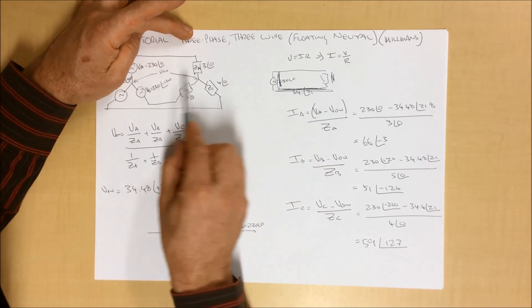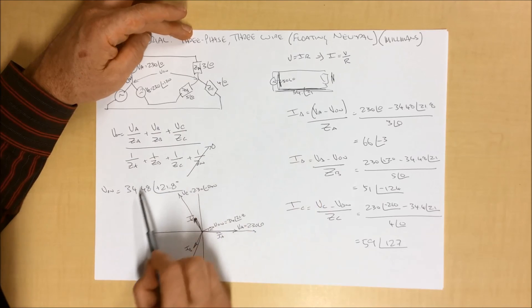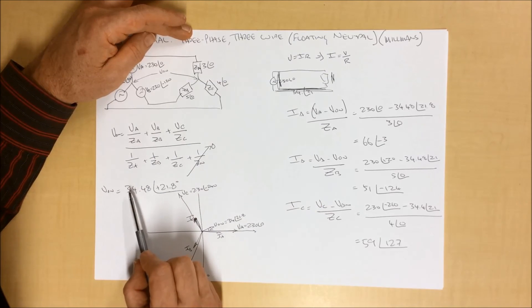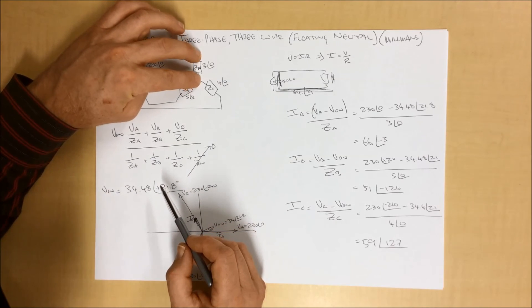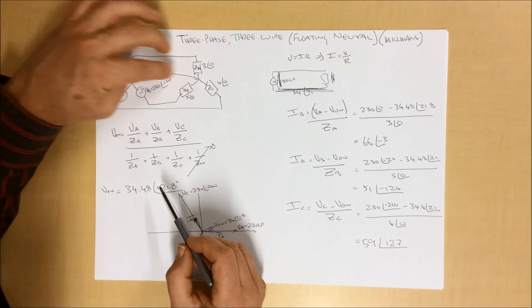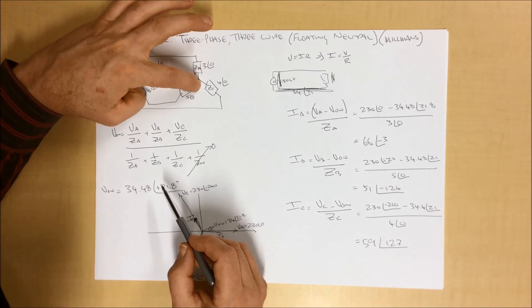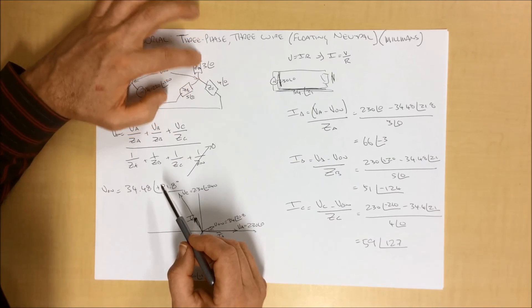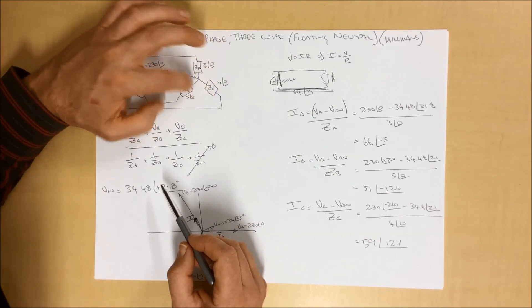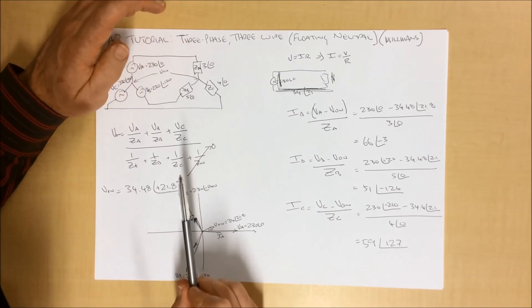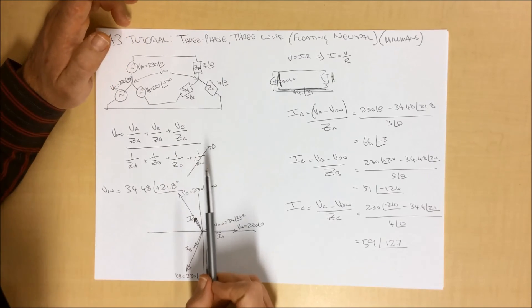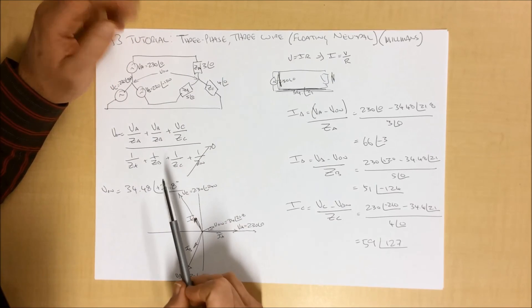We can find the potential difference using Millman's theorem, and in this particular case, it worked out to be 34 volts. Knowing that the voltage across here being the difference between our applied voltage and that voltage difference, we can therefore calculate the current through each of these phases. And we can see the imbalance in the magnitudes and the imbalance in the whole system.